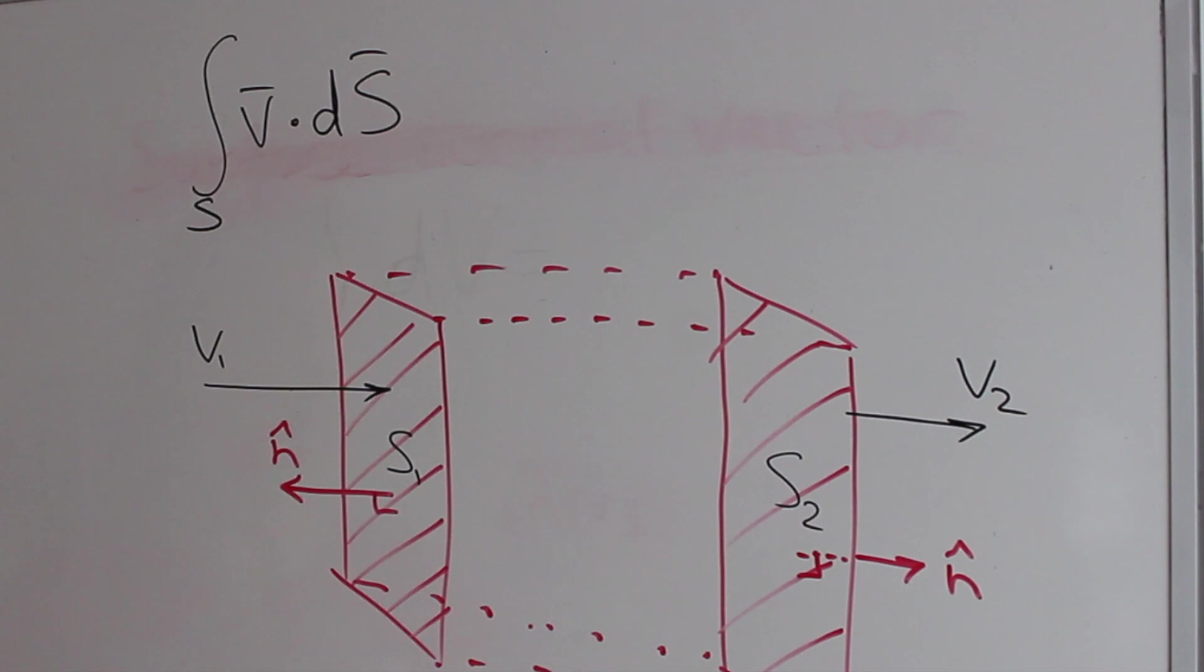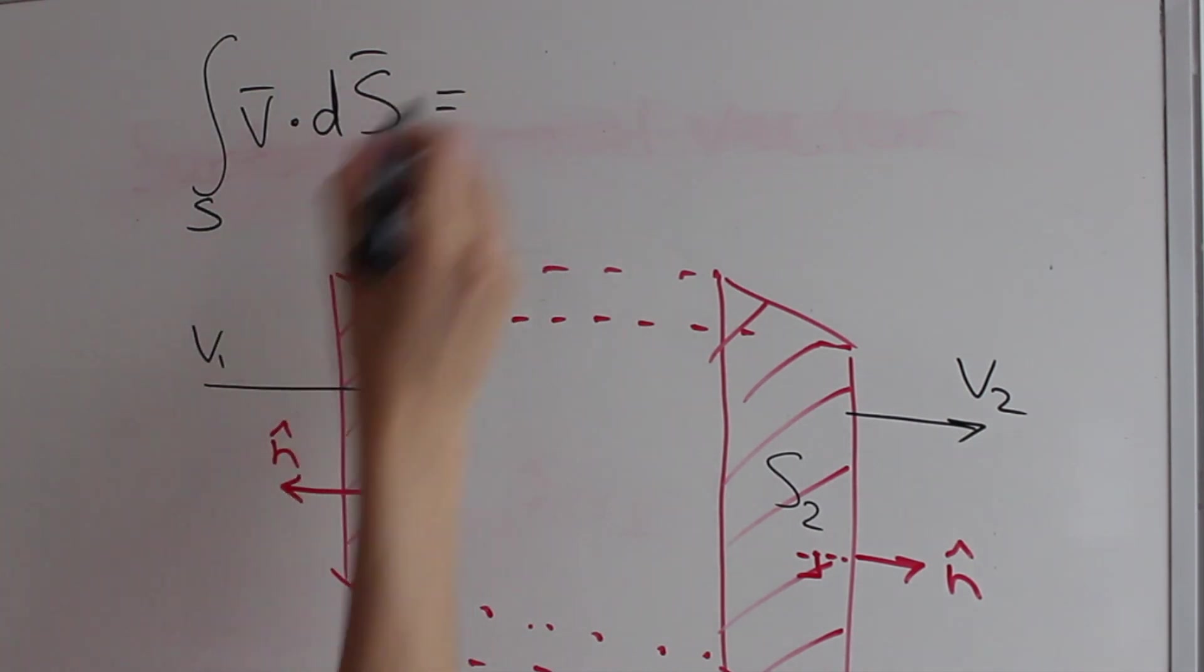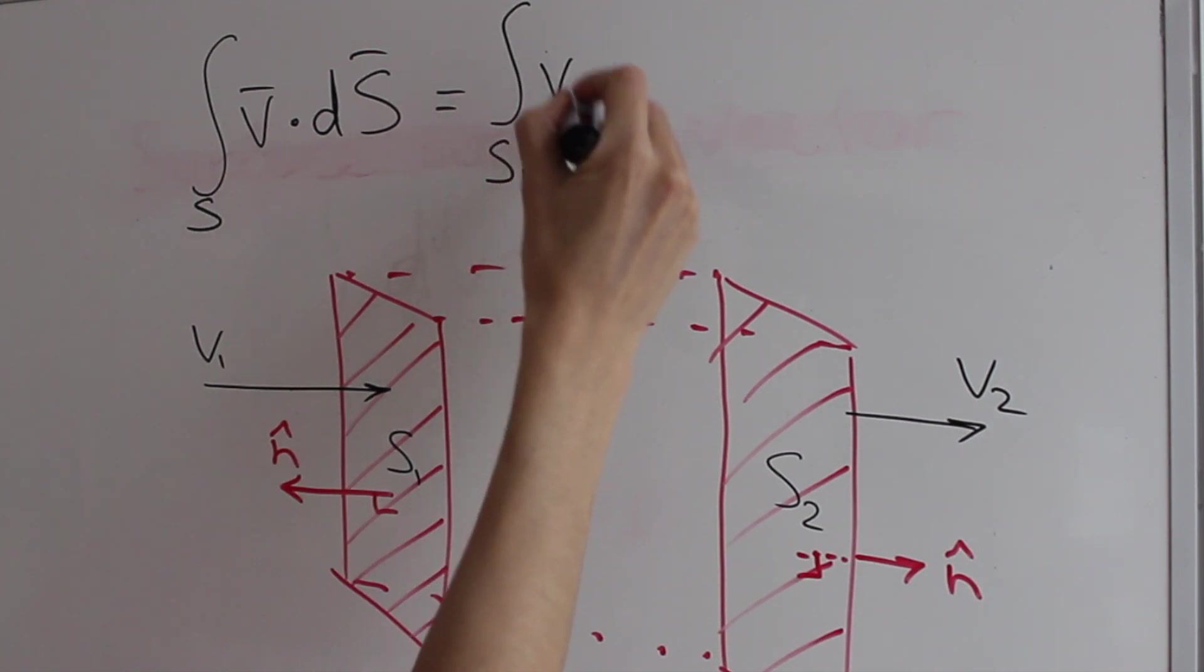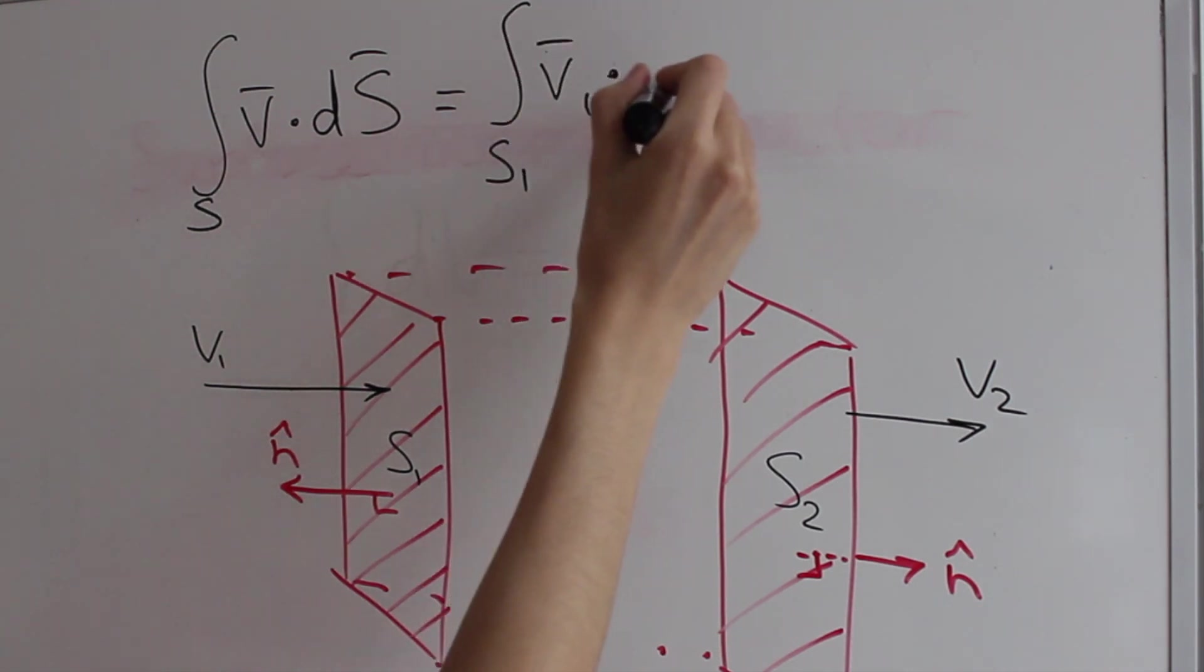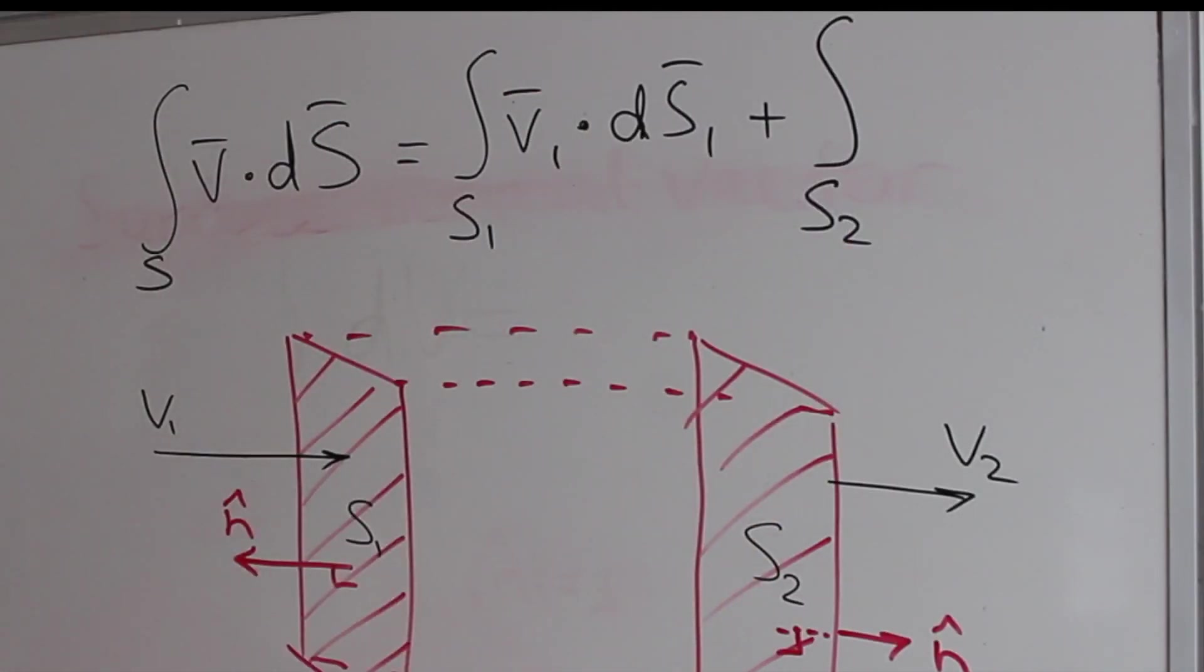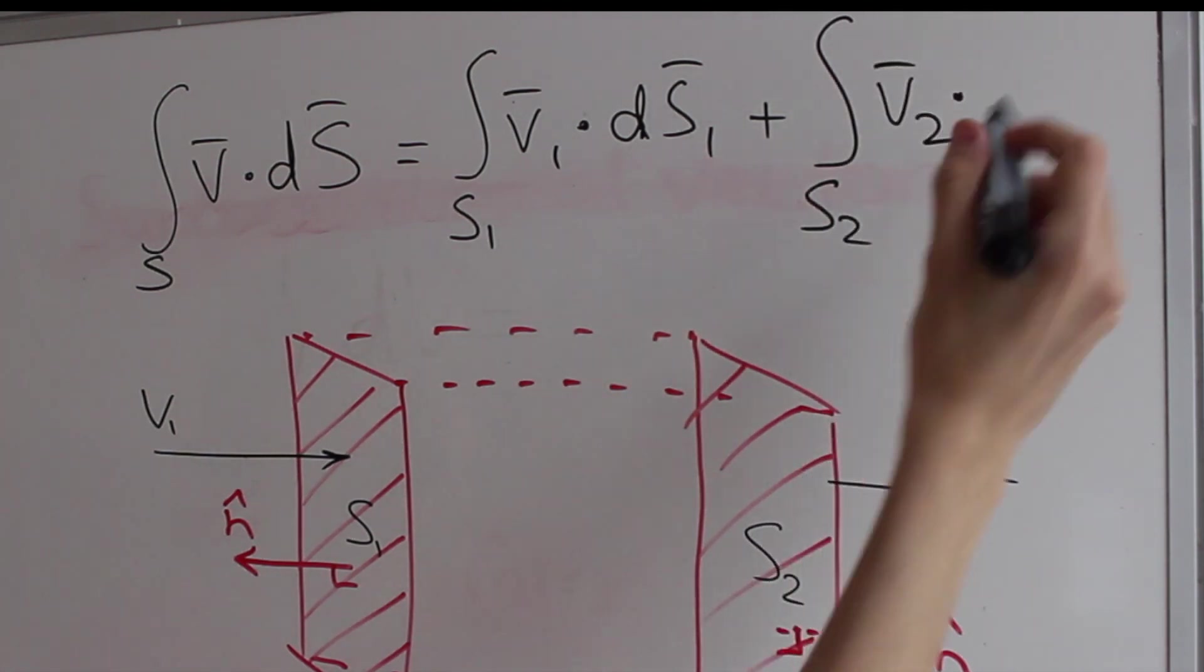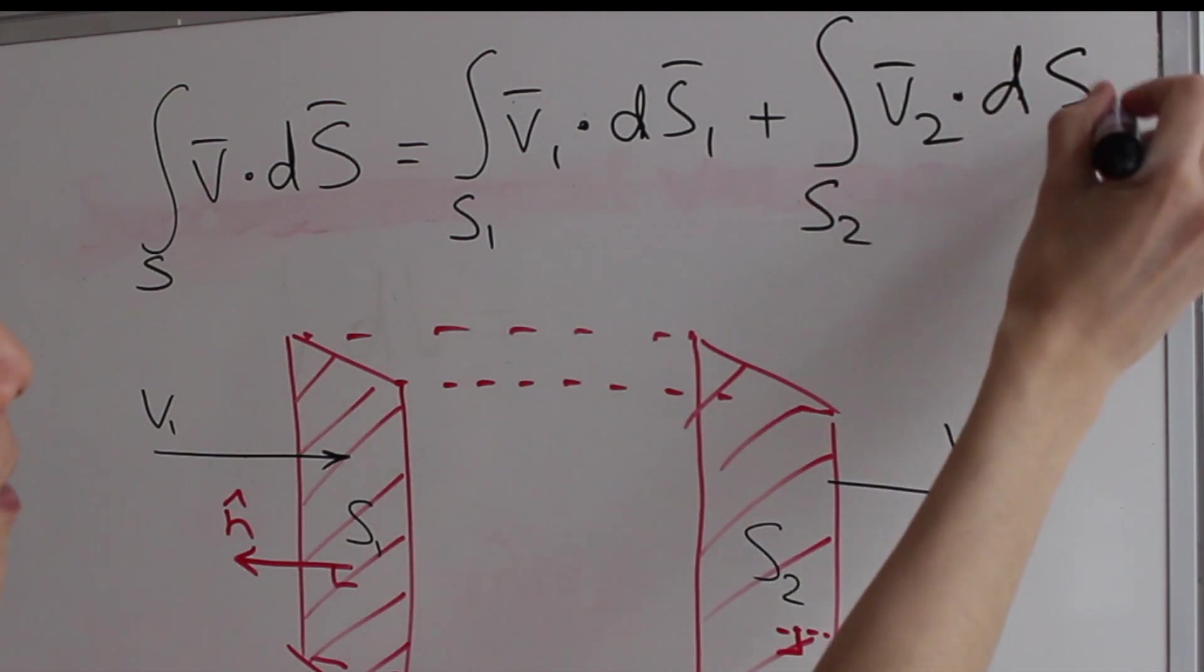First of all we can write this integral as a sum of two integrals. The integral over control surface s1, and we are going to plug in v1 vector dot ds1 vector plus the integral over surface s2 of vector v2 velocity of air dot ds2.